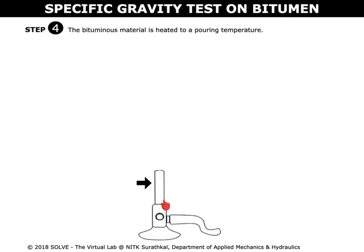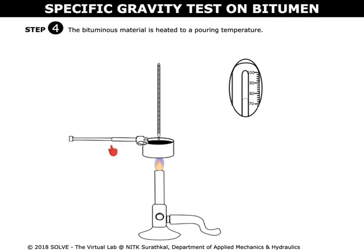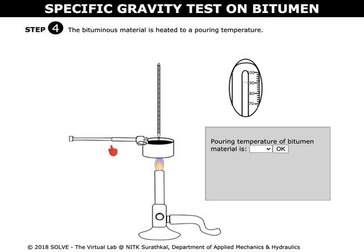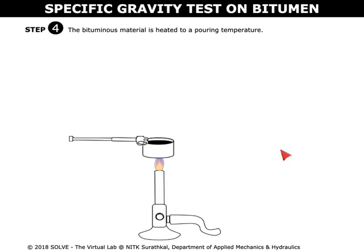Click on the Bunsen burner and heat the bituminous material to a pouring temperature in the mold. Click on the correct answer in the pop-up question to proceed to the next step. Stop the heat.